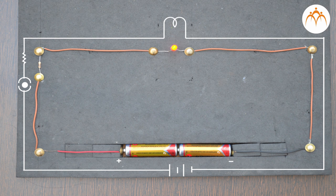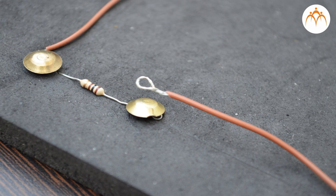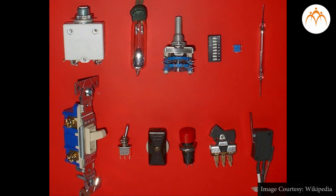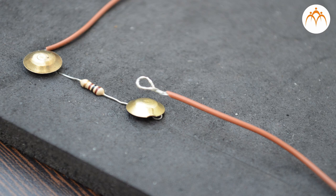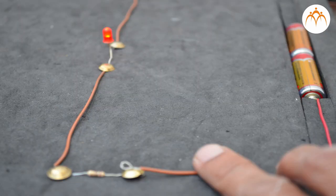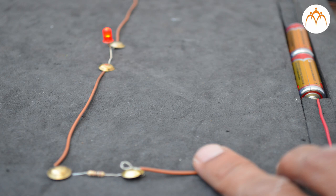Switch is used to toggle the current on and off in the circuit. Though we have used wire itself to act as switch, there are separate components which perform the same function. Switch in open position is shown like this, while in closed position it's shown like this. Current is flowing when switch is closed.